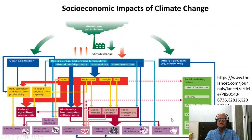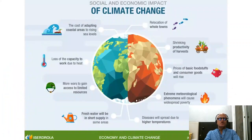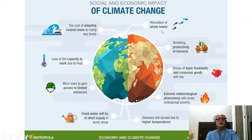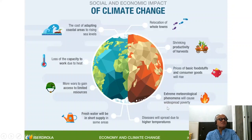There are other social determinants of health as well. Looking at broader socio-economic impacts, you have the cost of adapting coastal areas to rising sea levels and relocation of entire towns. Some islands, like Vanuatu, are making plans to move their entire population if things get really bad in coming decades. There are shrinking harvests, and prices of basic foodstuffs and consumer goods will rise. Extreme meteorological phenomena will cause widespread poverty, raising climate justice issues.